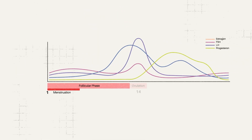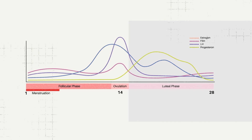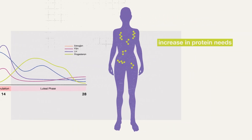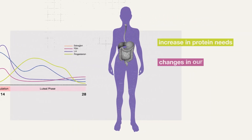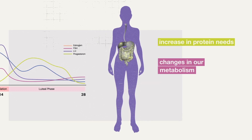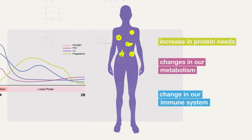Then we get into the post-ovulation or luteal phase — the high hormone phase — and we see an increase in protein needs, changes in metabolism where we rely more on free fatty acids, and a shift in the immune system toward a more pro-inflammatory response. That also holds true.